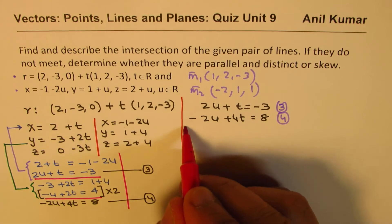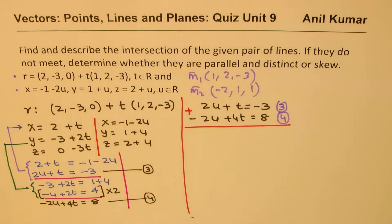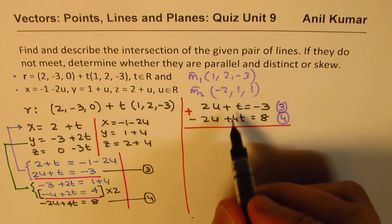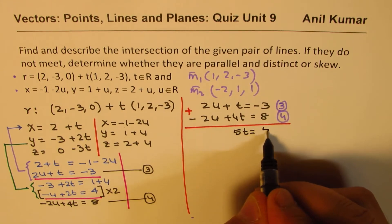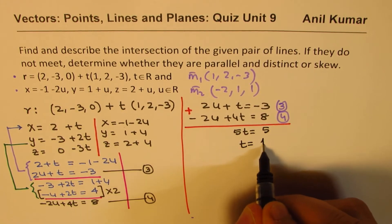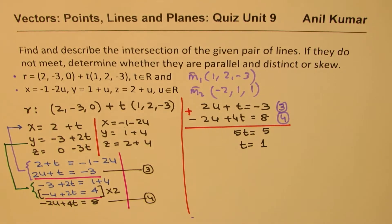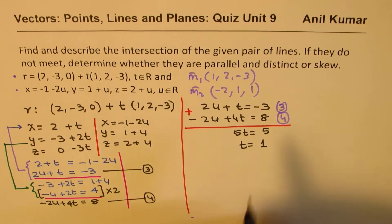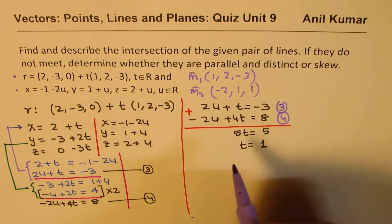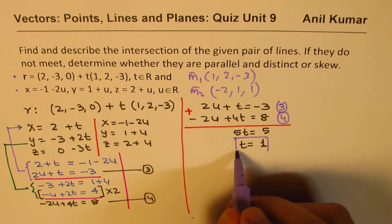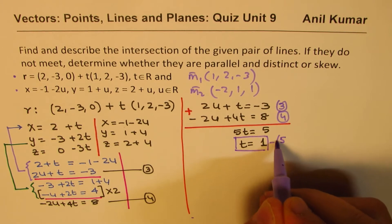Now, we can add them up. So if we add them up, you get what? 5t = 5, and that gives us t = 1. Correct? So we get a value of t as 1. Now, let's say this is one value which we have got for t. Let's call this as equation 5.